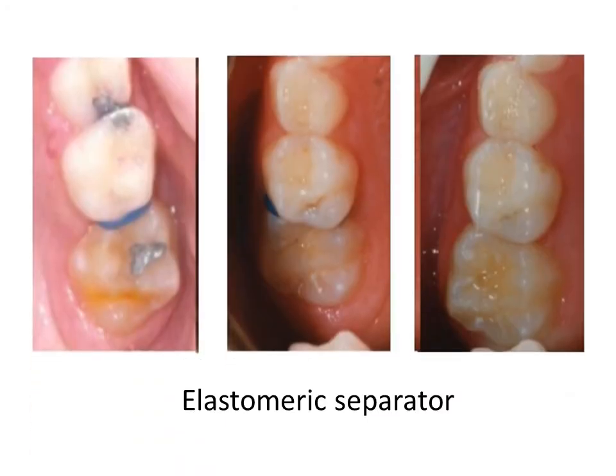The second method is the use of an elastomeric separator, which is stretched and inserted in the contact point between the E and the sixth, leading to improvement in the pathway of eruption of the sixth.